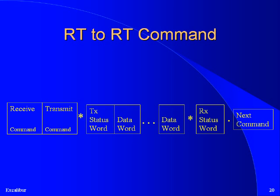An RT to RT command begins with the bus controller sending two command words. The first instructs an RT to prepare to receive data, and the second instructs a different RT to transmit data. The transmitter then transmits a status word followed by the requested data. Finally, the receiving RT transmits a status word indicating successful reception of the command and data.